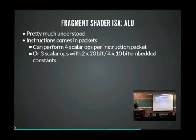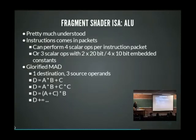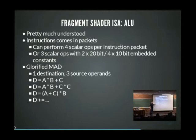The instructions come in packets of four 64-bit words, which are either four scalar operations or three scalar operations, plus up to four embedded constants - either two 20-bit floats or four 10-bit fixed-point values. The rest is basically a glorified MAD with one destination and three source operands. The MAD instruction has bits to choose different modes: squaring the C component, changing the order of operations, multiplying before adding or adding before multiplying.